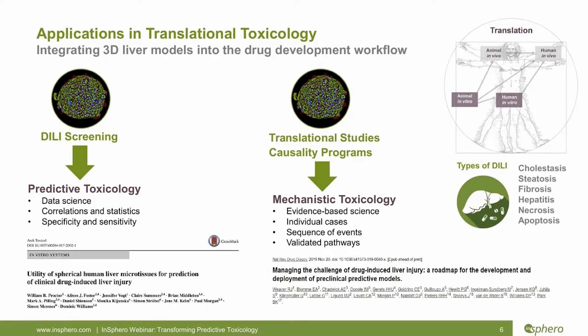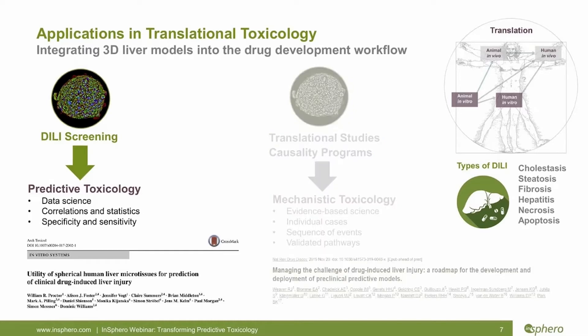That brings me to the advantages of using 3D spheroids for liver toxicity. When talking about drug toxicity in the liver, there are two main areas: DILI screening, where you're trying to accurately identify toxic compounds before they get too far in clinical trials, and the other area is when you've already identified a drug to be toxic and want to understand the mechanism of toxicity. For the sake of time, I'll save the translational discussion for an upcoming seminar, and today focus exclusively on predictive toxicology and what we found to be important characteristics of a 3D model.